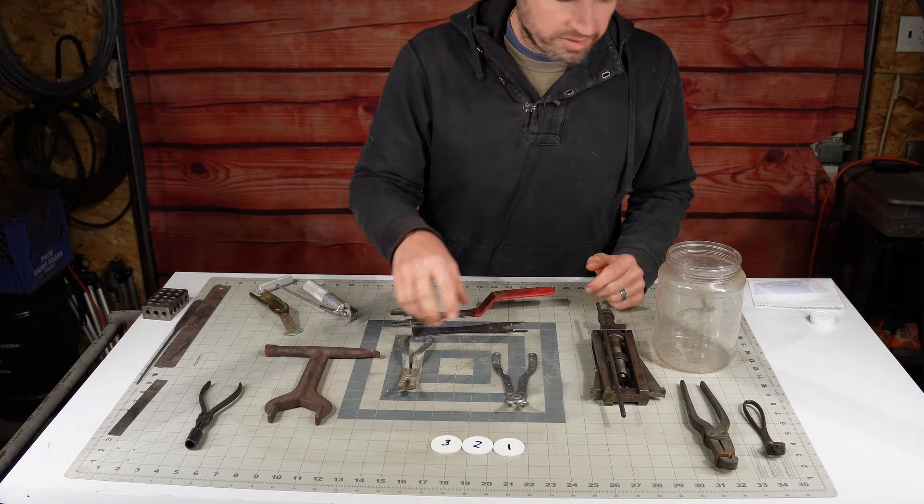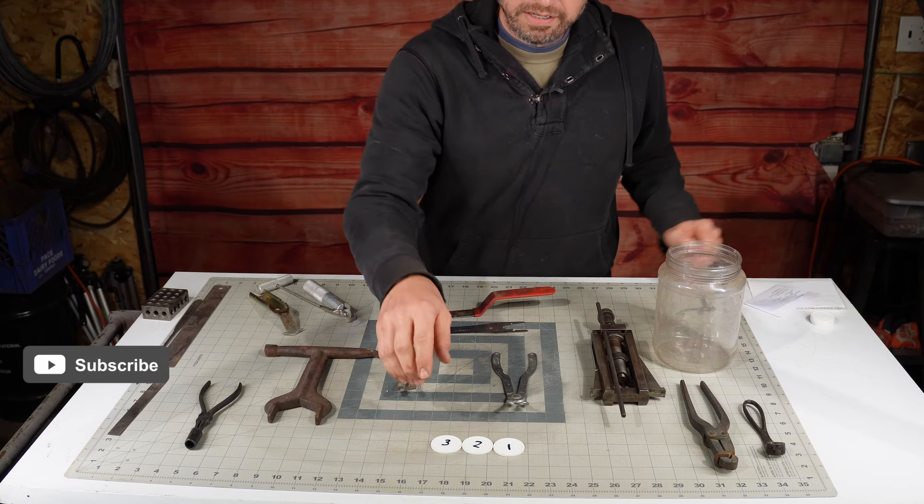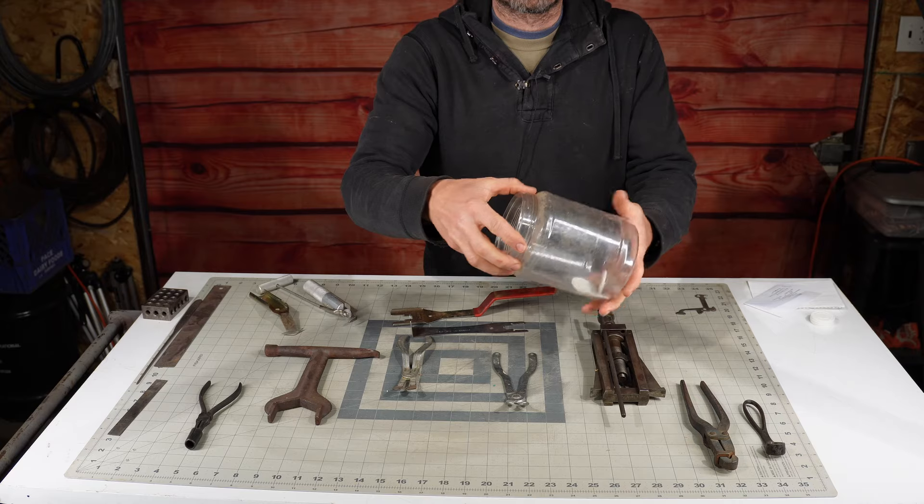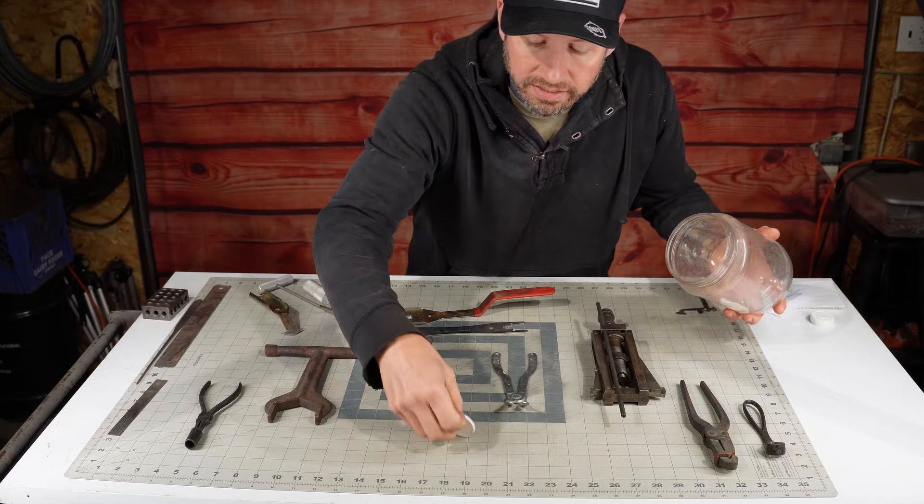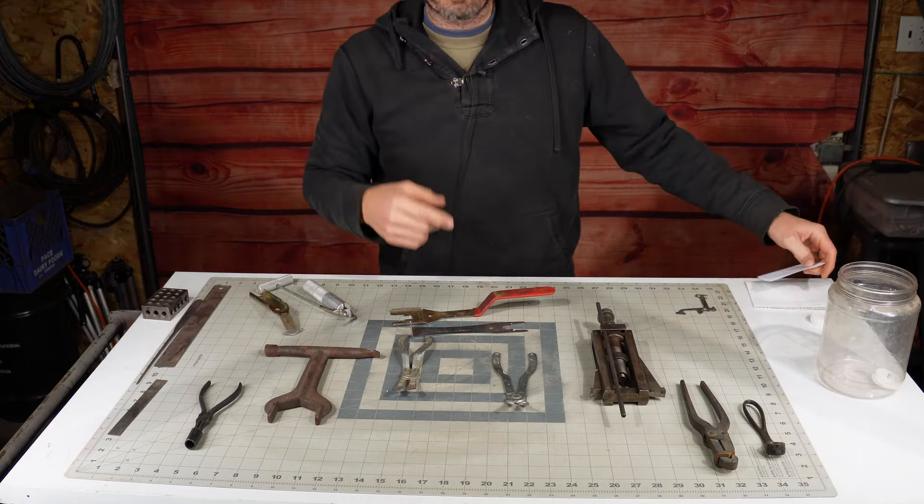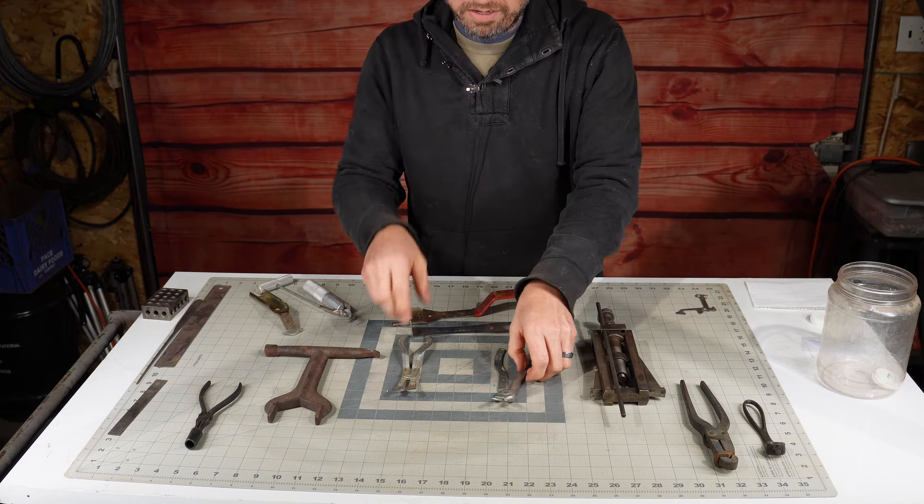All right, so we only had three entries this week. It was Mr. Harley, Jen, and Raw Bacon. So one, two, and three, we'll throw them in here. Not looking. Who is it? Raw Bacon again. All right, congrats Raw Bacon. This is your third time winning now. You know the drill, so get with me and we'll get that panned out.